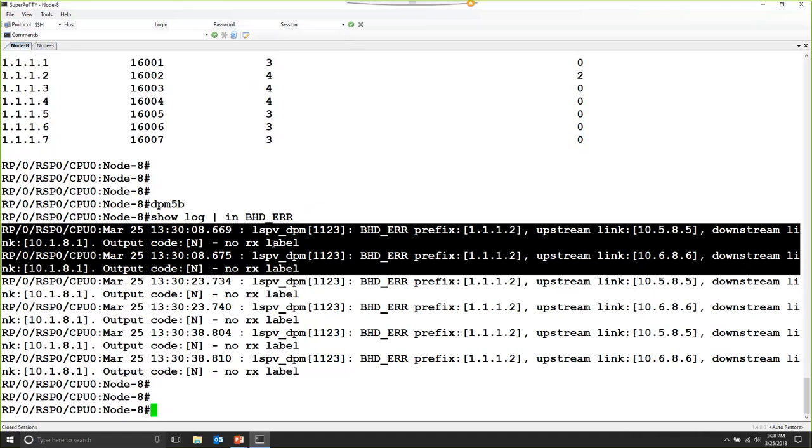So as a result of the execution of the DPM process, router number 8 can raise an alarm saying, we're sending traffic to router number 1. Router number 1 is telling me that he doesn't have an RX label.